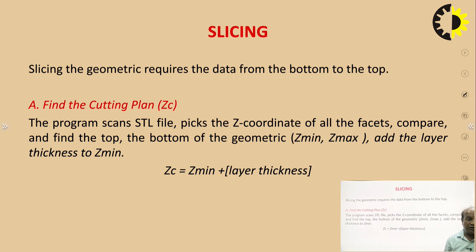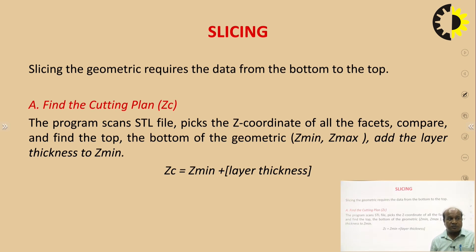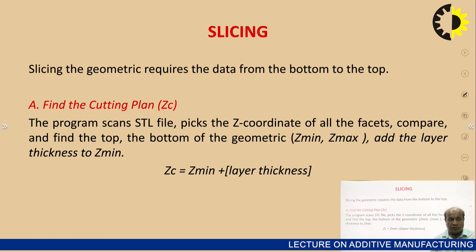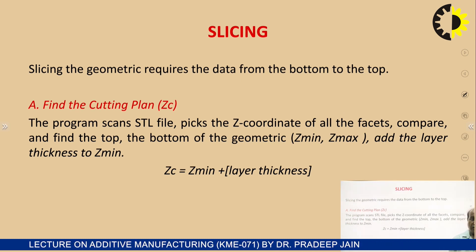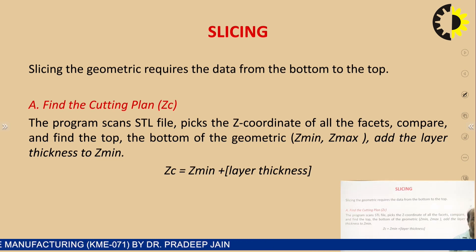The next step after triangulation is slicing. Slicing is a very important task in additive manufacturing. Slicing the geometry requires data from the bottom to the top. First, we have to find the cutting plane. The program scans the STL file, picks the Z coordinates of all facets, compares them and finds the top and bottom of the geometry — Z minimum and Z maximum — and adds the layer thickness to Z minimum.